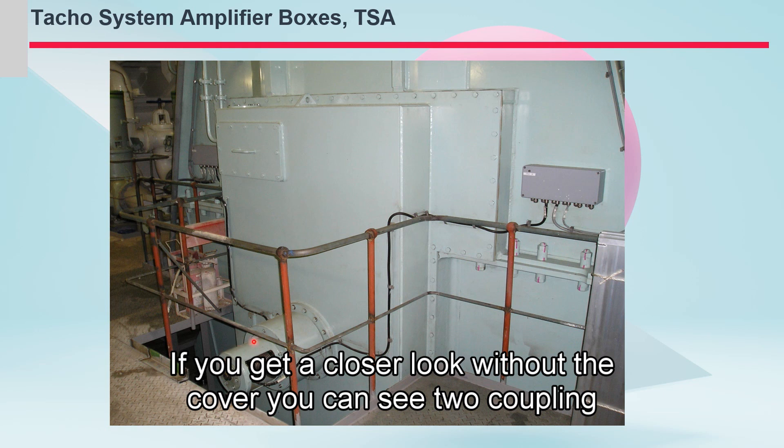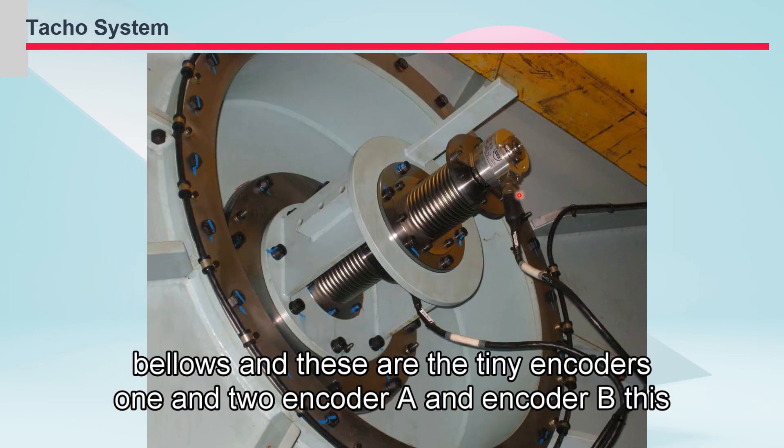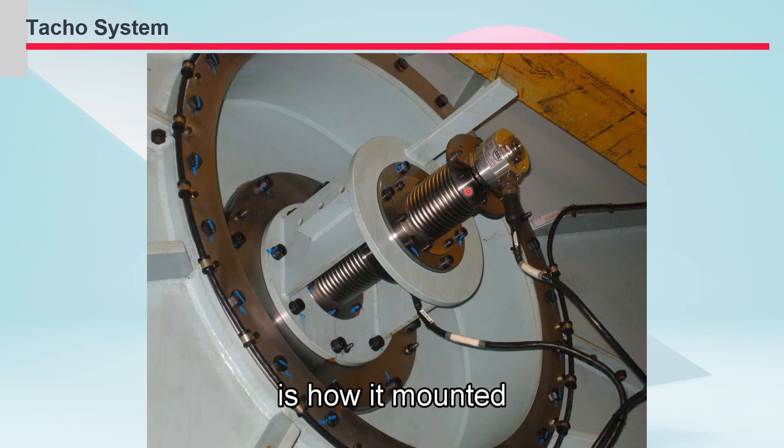If you get a closer look without the cover, you can see two coupling bellows, and these are the tiny encoders, one and two, encoder A and B. This is how they're mounted on the engine free end.